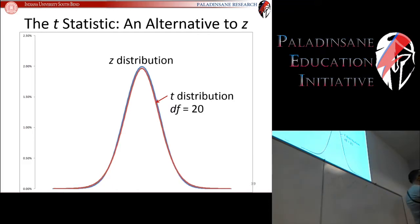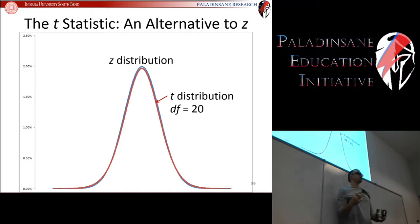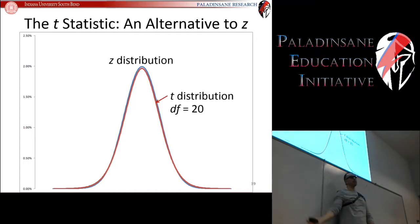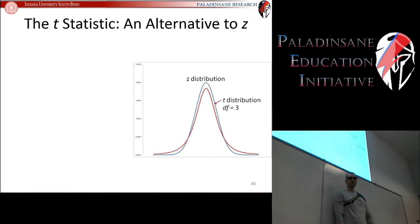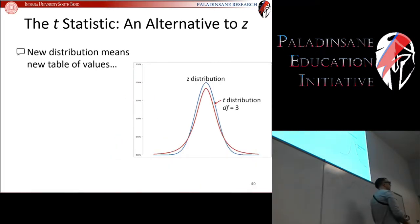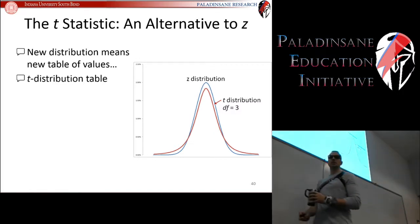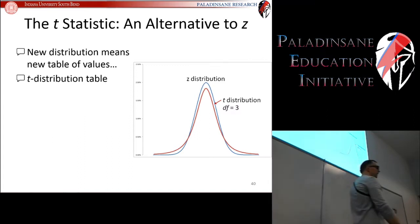That's the t-distribution — our new comparison distribution. It's our new comparison distribution because we don't know the actual standard deviation of the population; we're estimating it with the sample standard deviation. Since we have this new distribution, we can't use the old table. We now have a new table of values to access — the t-distribution table — and we're going to see how to read it when we look at our example today.